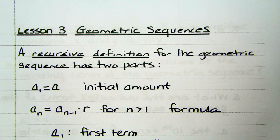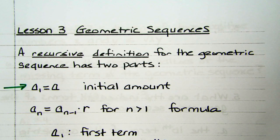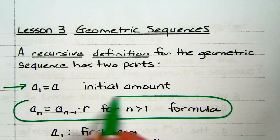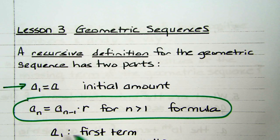With the recursive definition for a geometric sequence, you have two parts. You have your initial amount — think of the exponential, like we started with $5,000 in the account. And then we're looking at how it grew over time, which was our growth factor, which is going to be our R, our common ratio. The first term is A sub 1, and R is your common ratio.